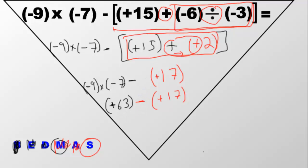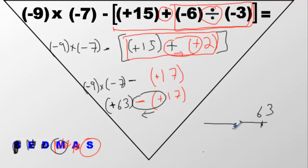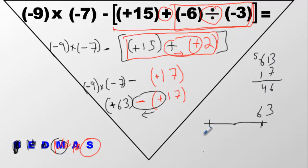Now look at this. The rule for subtraction: look at these two signs — if they're different, go to the left. Here's 63 on our number line. We're going to go to the left, so we're going backwards 17 spots — that's 63 minus 17. That gives us positive 46. We're going backwards 17, so we get positive 46 as our answer.